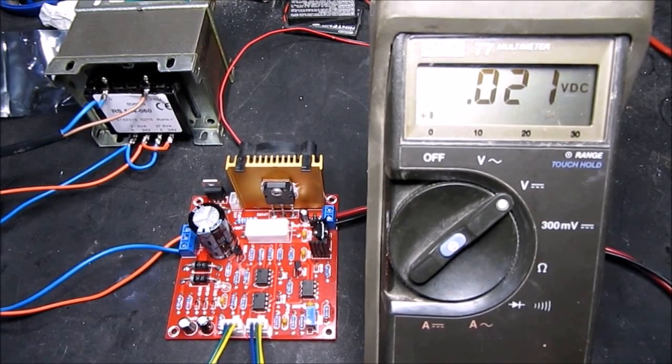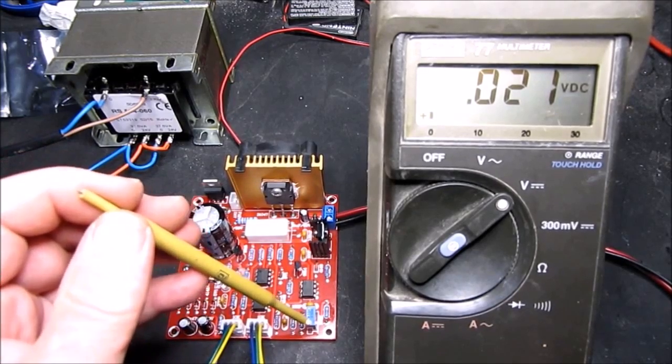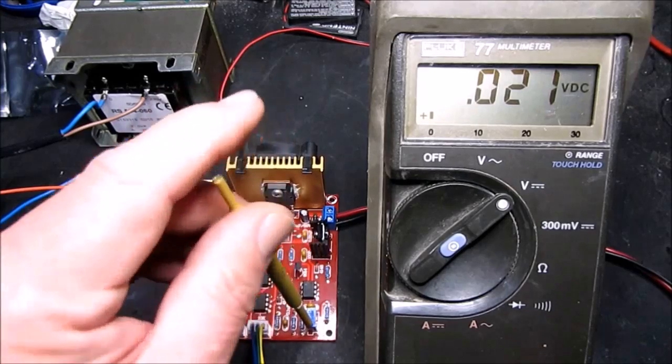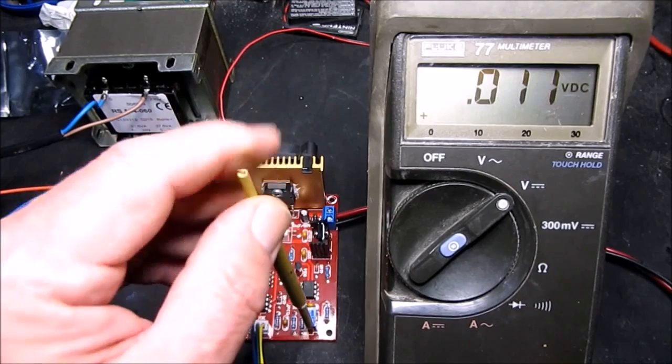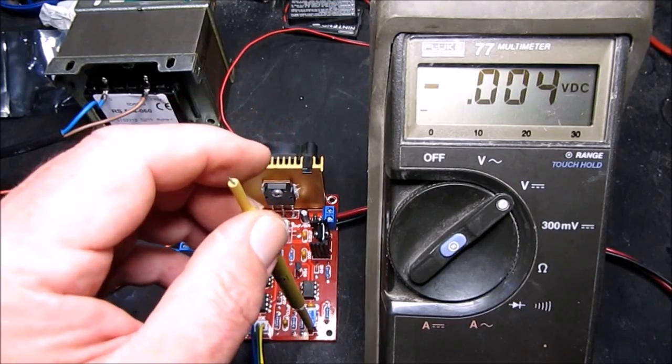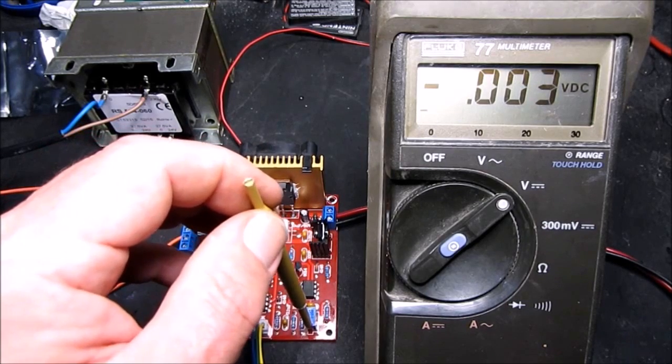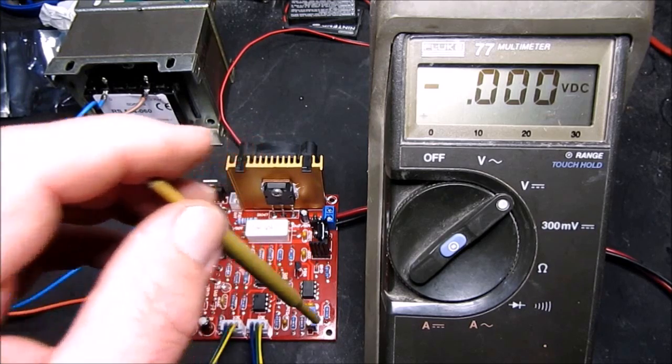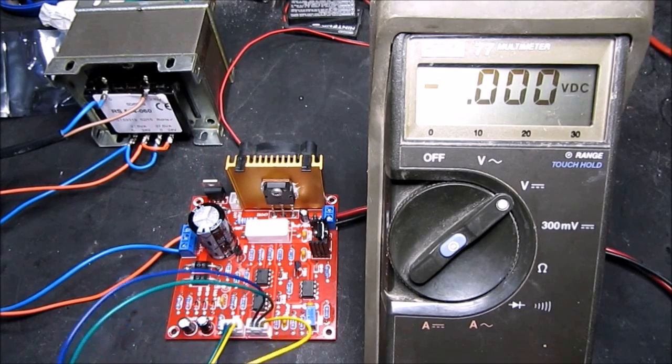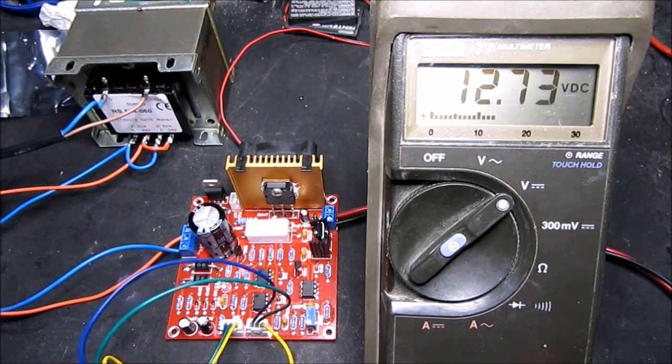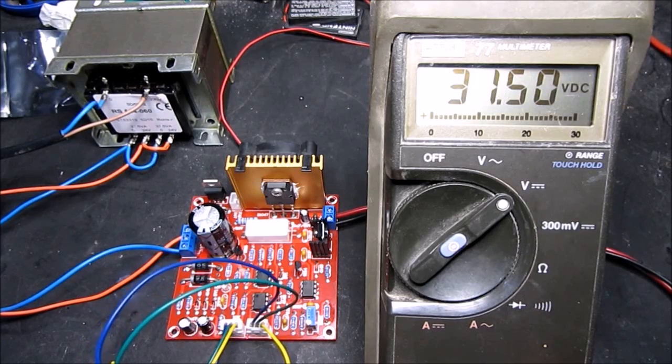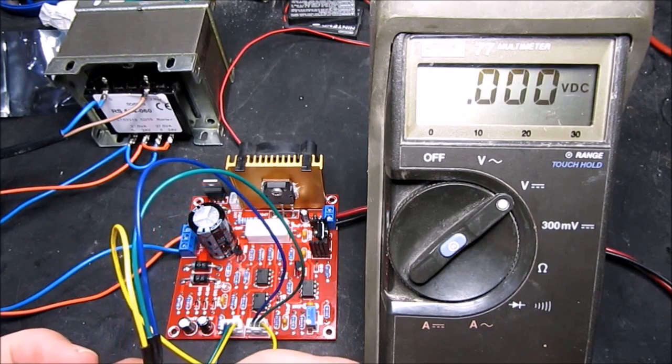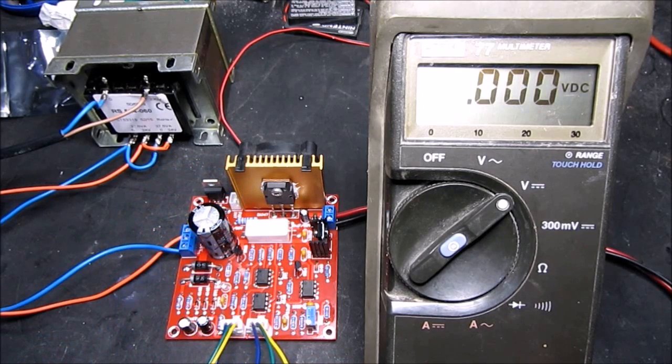OK, so we have a small DC offset, which we need to zero by trimming this potentiometer. I see it's gone slightly negative now, so let's tweak that the other way. OK, so we have zero on the offset now. And if we turn the voltage potentiometer up, you can see the voltage cranking up there to the full 31 volts. And then just rotating it back to zero. So that's the first part of the calibration done.